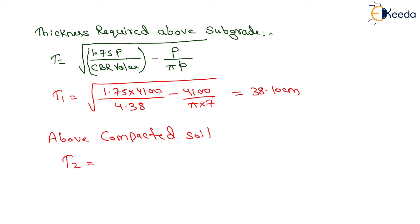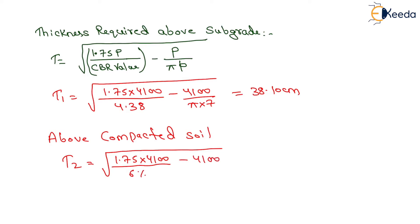Now we determine T2, the thickness above compacted soil, using the formula: T2 = √(1.75 × 4100 / CBR − 4100 / (π × 7)), where the CBR value for compacted soil is 6%. After solving, T2 equals 31.77 cm.